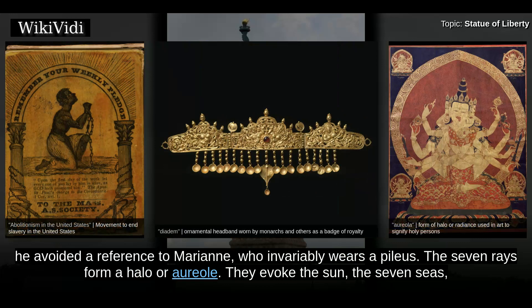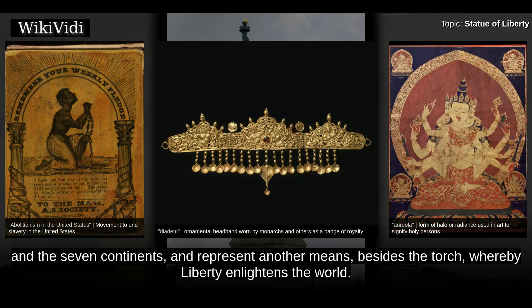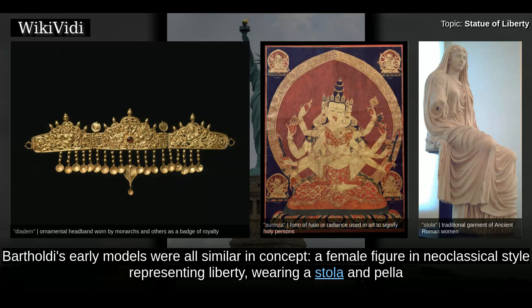The seven rays form a halo or aureole. They evoke the sun, the seven seas, and the seven continents, and represent another means, besides the torch, whereby liberty enlightens the world.